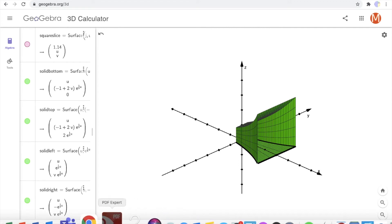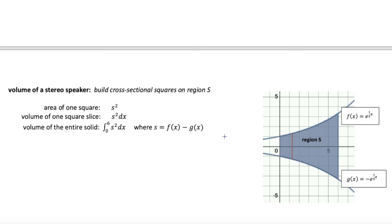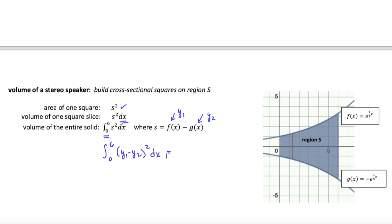Back to the handout to set this up. The area of a square is s squared, and in this problem s is just the difference between the two functions. Give the square some thickness with dx, then integrate to add them all up. On the calculator, we're integrating from 0 to 6 with the two functions in y1 and y2, integrating (y1 minus y2) quantity squared. When you evaluate that integral you get about 100.232 cubic units.